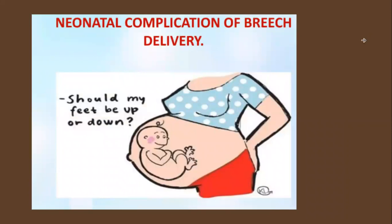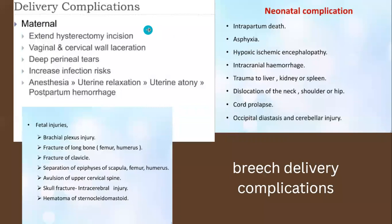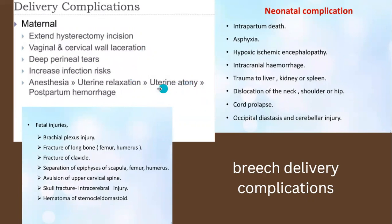Neonatal complications of breech delivery include: intrapartum death, asphyxia, hypoxic ischemic encephalopathy, intracranial hemorrhage, trauma to liver, kidney, and spleen during manipulation. Maternal complications include extended hysterectomy, incision complications, possible emergency surgical hysterectomy, vaginal and cervical lacerations, perineal tears with vaginal breech birth, increased infection, anesthesia risk, uterine relaxation, PPH, and uterine atony. Specific fetal injuries include brachial plexus injury, fracture of bones, torsion of the cervical spine, skull fractures, and hematoma.